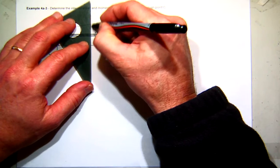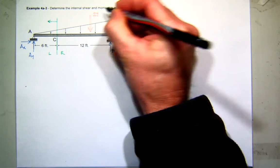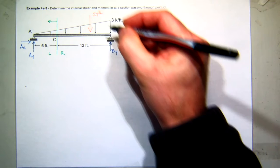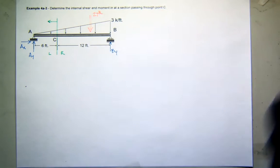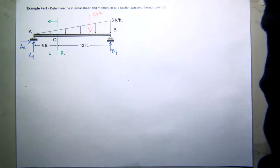It's one-half base times height, so one-half base. My base is 18 and my height is 3, so that's 27. So I'll have a concentrated equivalent load of 27 kips. And then where is it located?